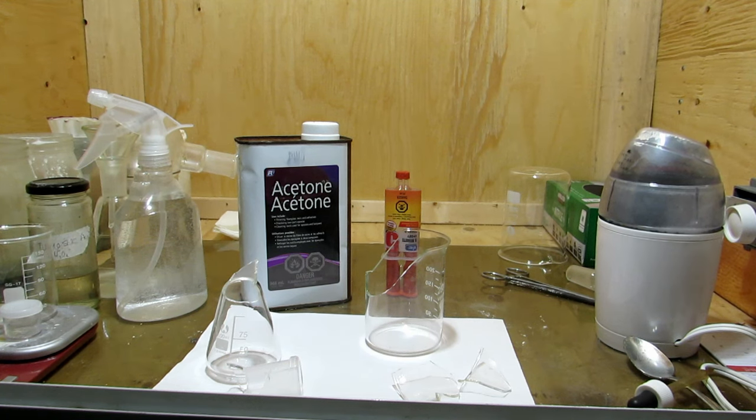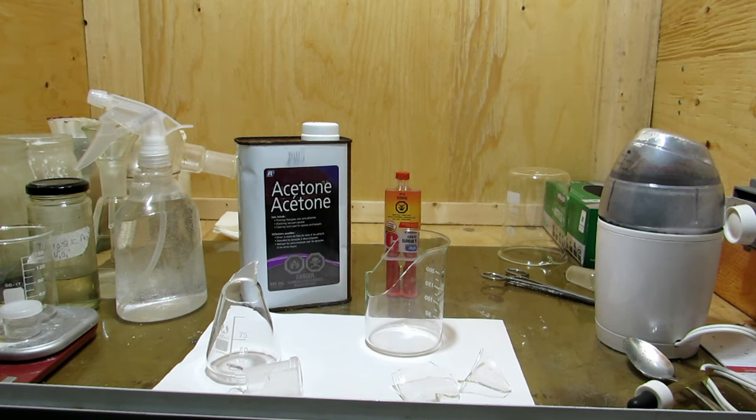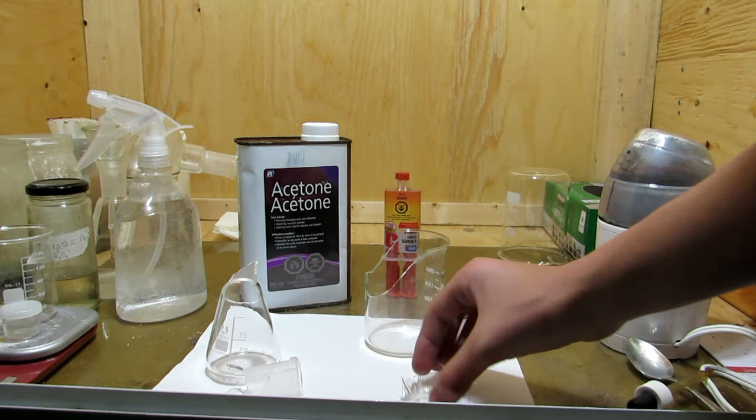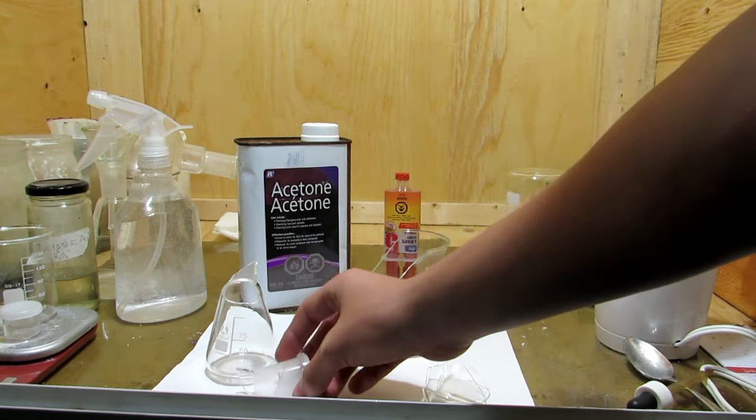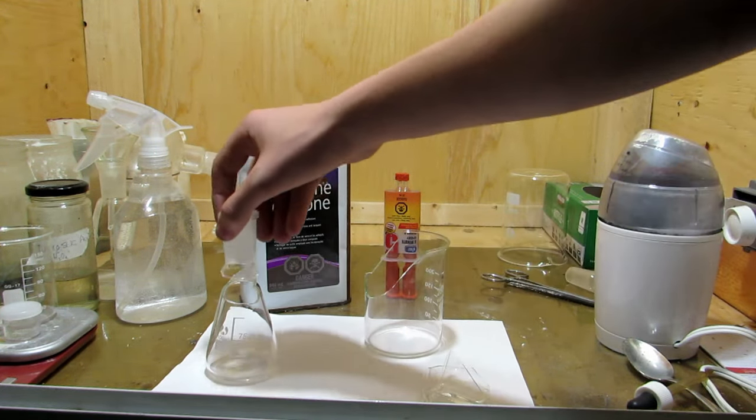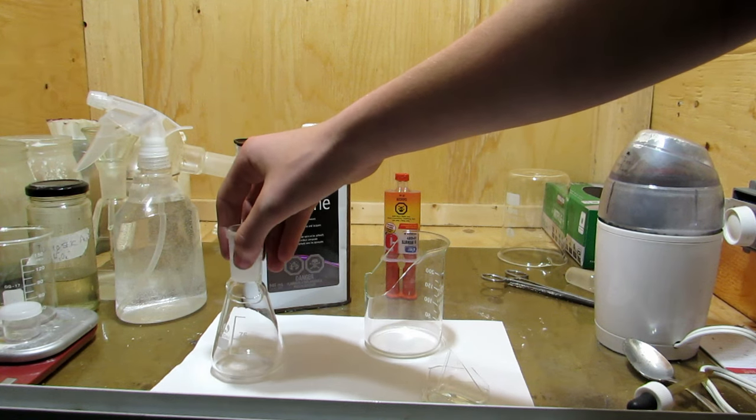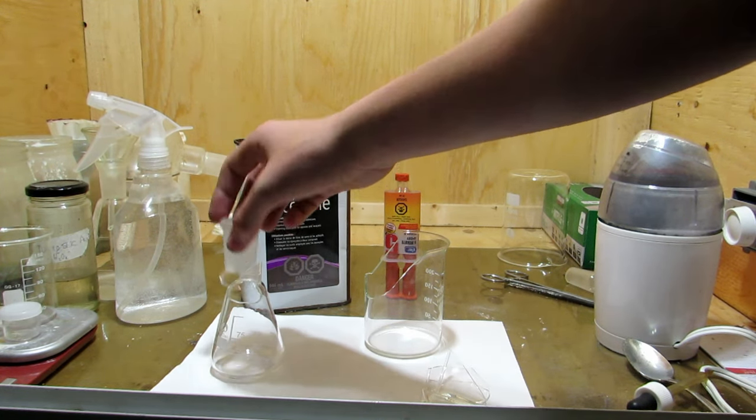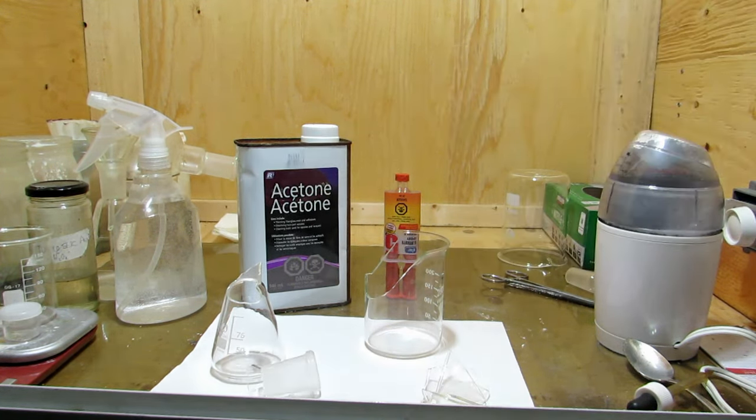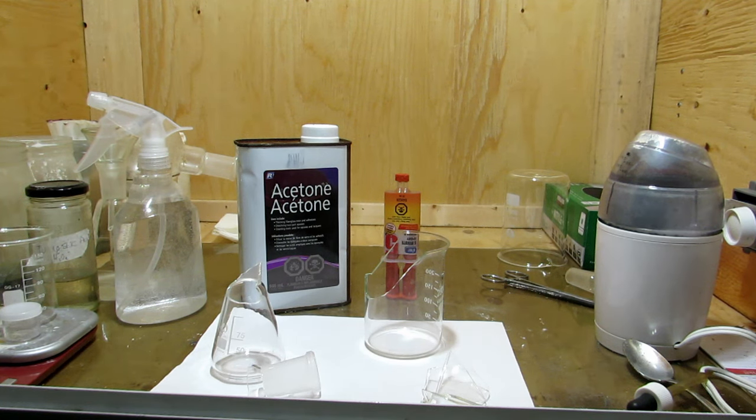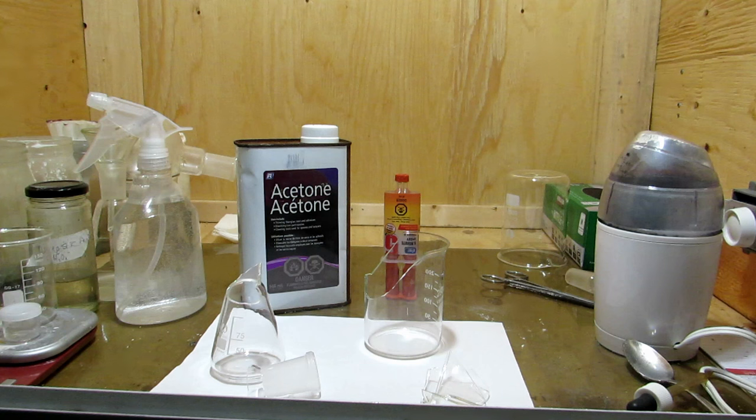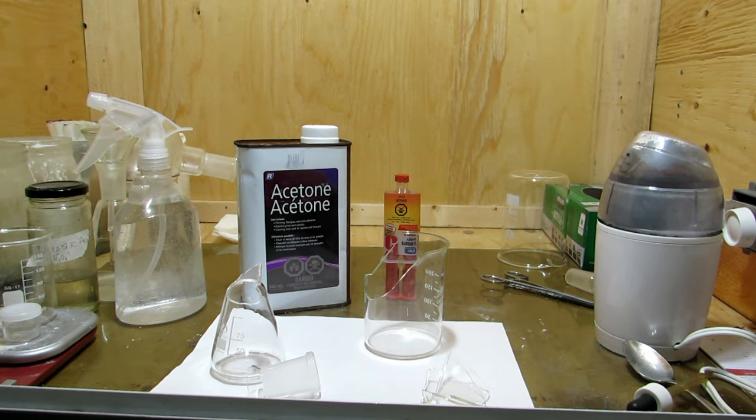Sometimes glassware totally shatters and you must throw it out, but other times it breaks into two or three pieces, or maybe even one piece, and you can still fit it back together. However, the problem is you can't just let it sit there because it's not connected. You could take a propane torch to this and heat it up, but that typically warps the glass, and I find it causes it to crack most of the time, and it just doesn't work very well.